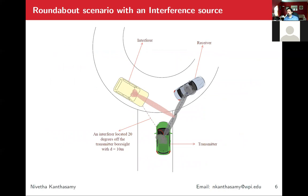Since we constructed two different scenarios, this figure illustrates the roundabout scenario. Here, the green car and the blue car are the transmitter and receiver respectively, whereas the yellow vehicle is the interference source. We are considering the same situation where the interferer is located 20 degrees off the transmitter on both sides, with the distance between the transmitter and the interferer being 10 meters.